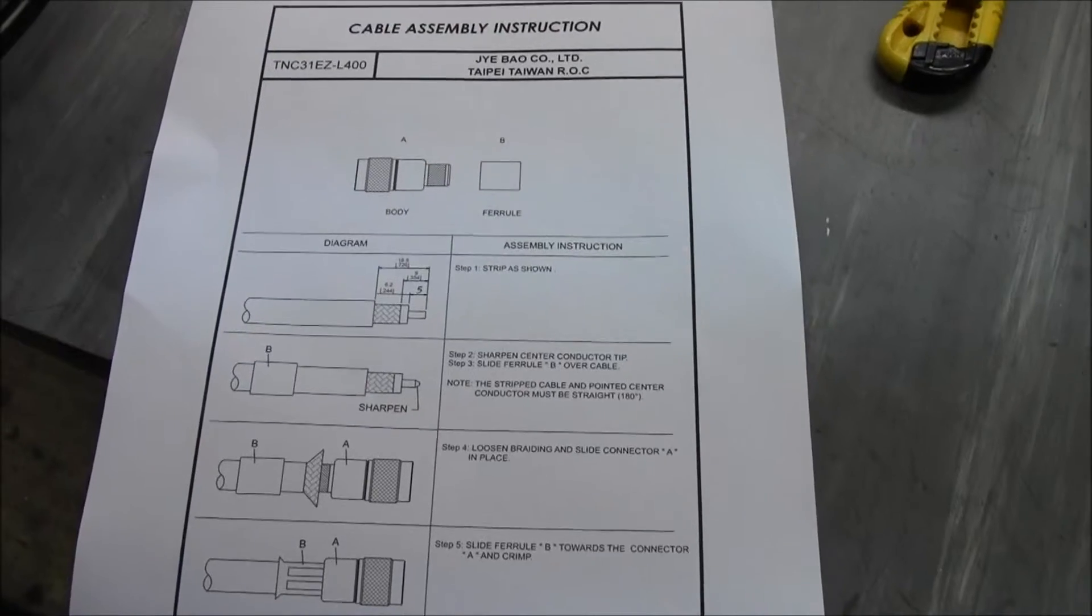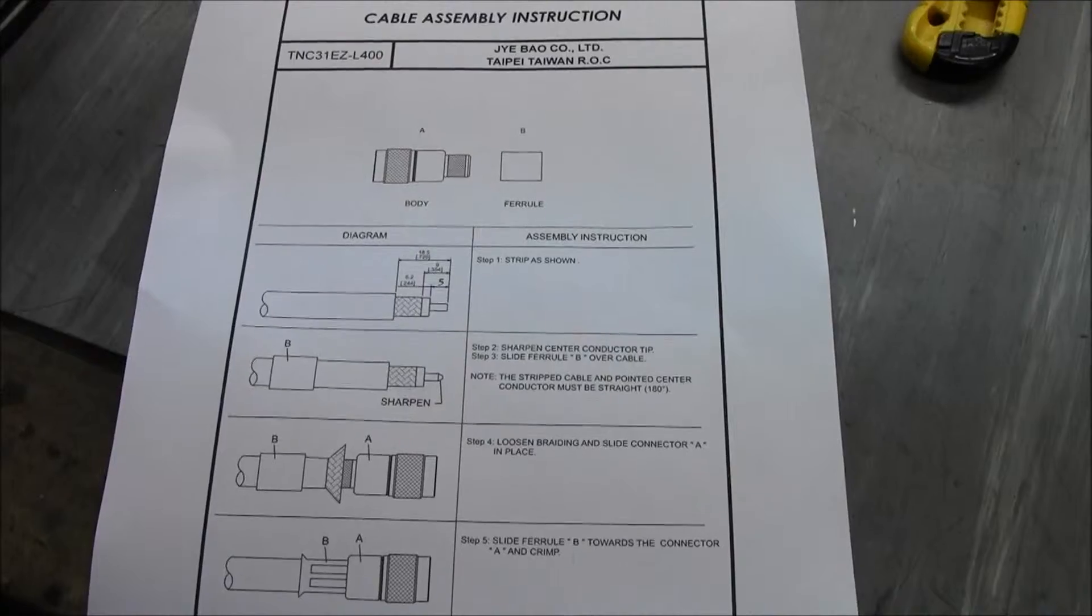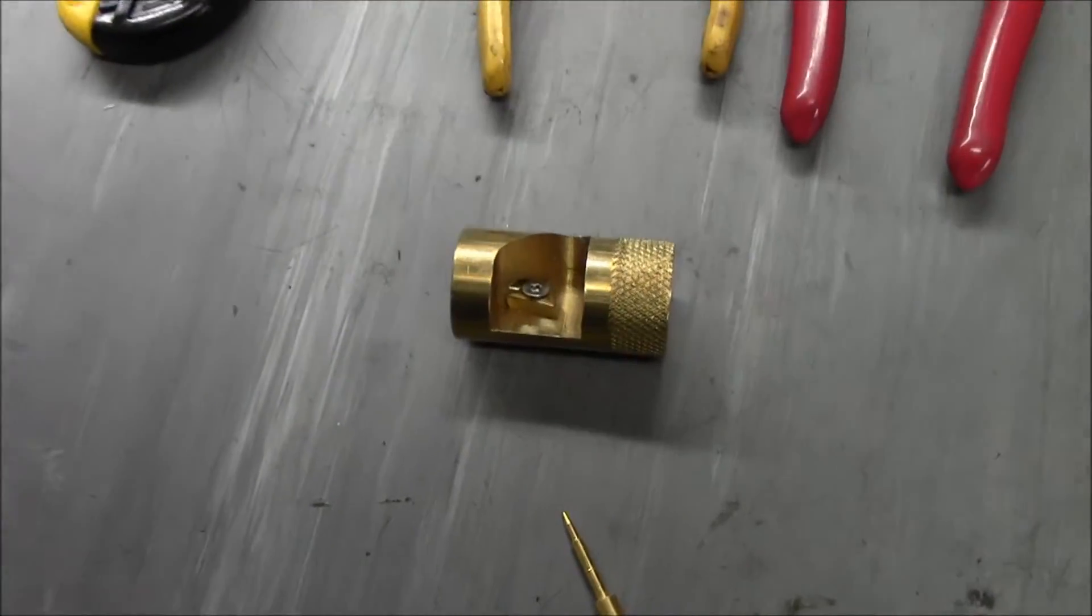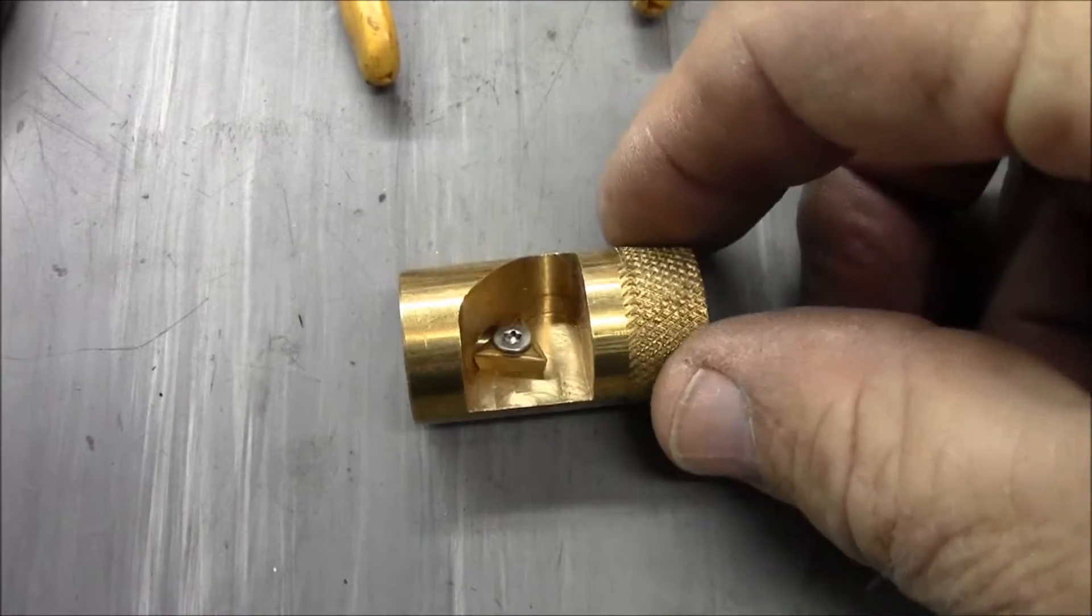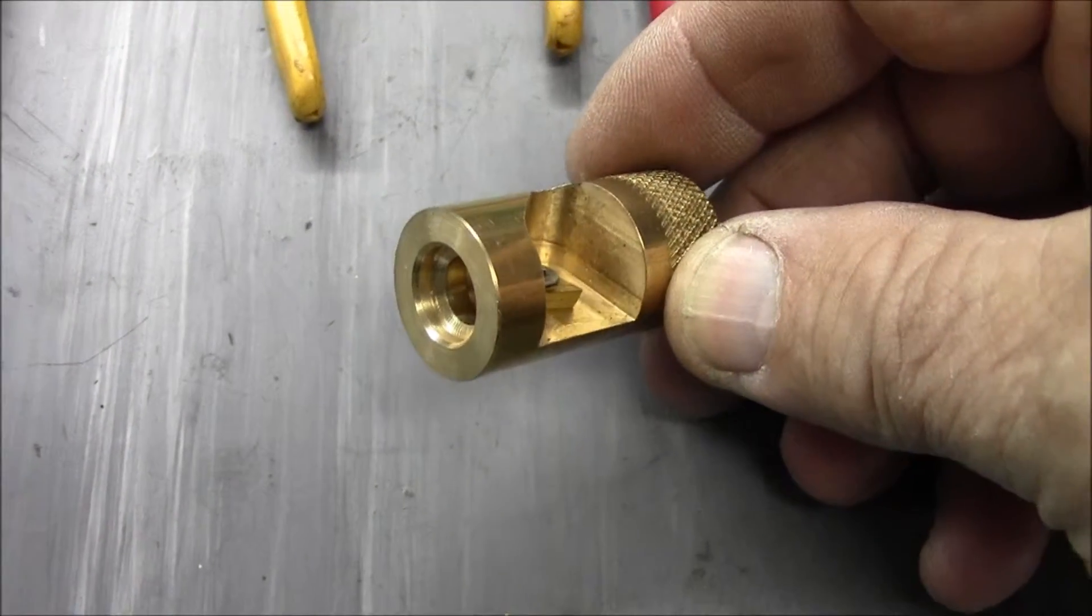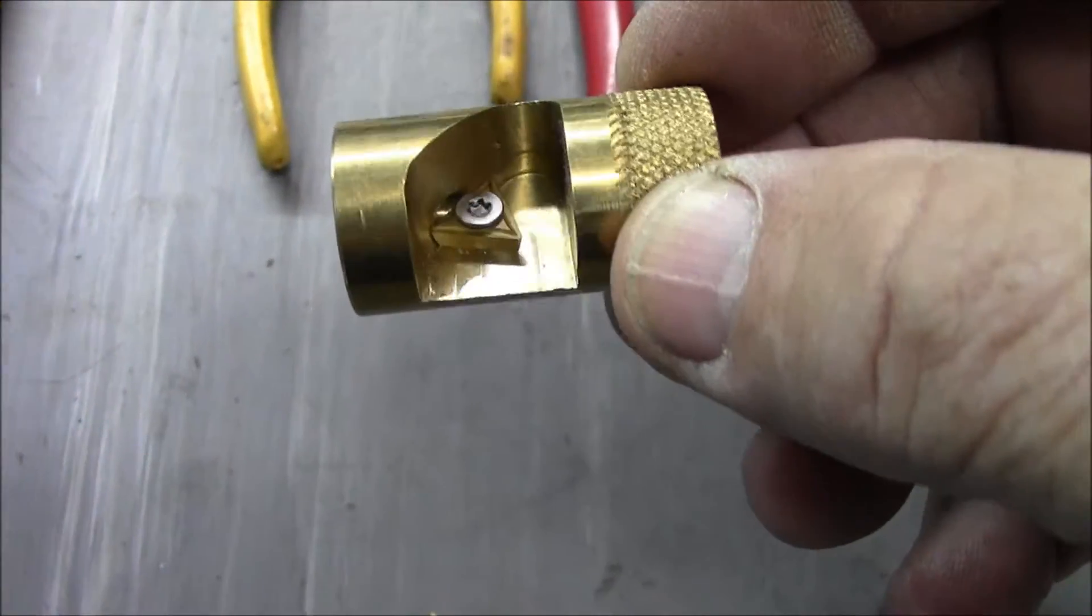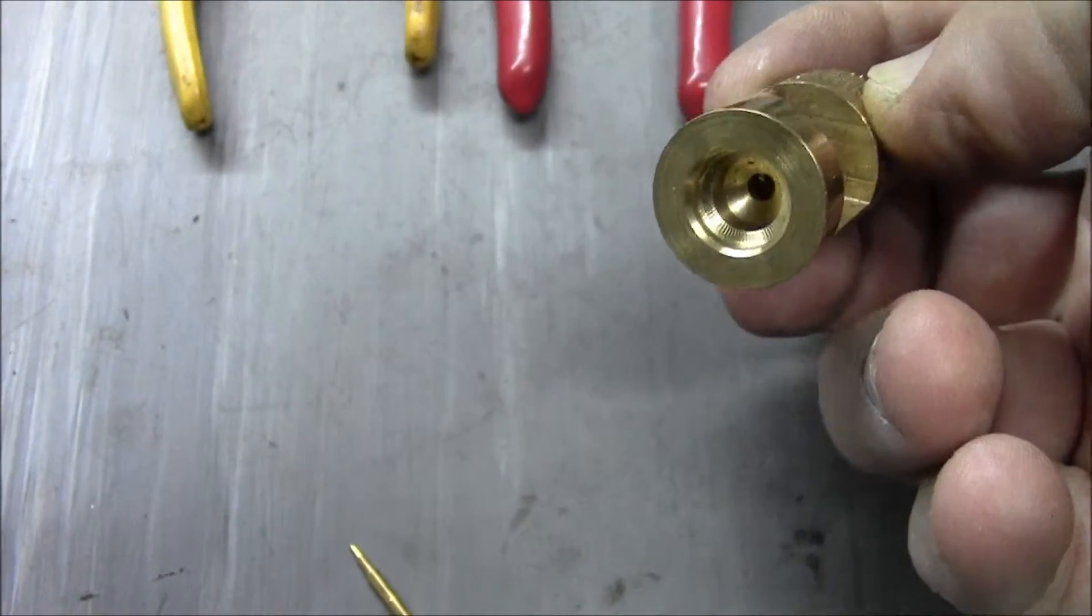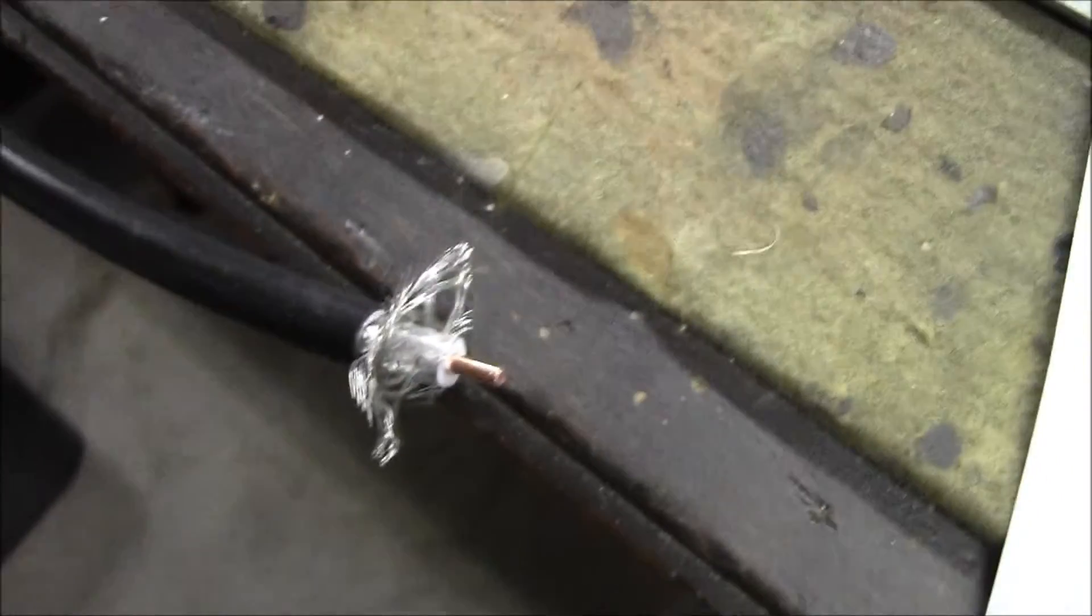Good morning. Today I'd show you how I use another tool that I manufacture, which is basically a pencil sharpener. It consists of a CNC machined brass body with a carbide insert attached to it that I designed, and it's designed to put a point on LMR 400 cable.